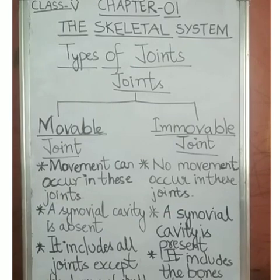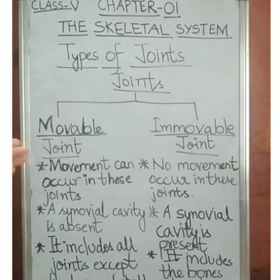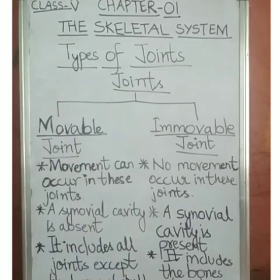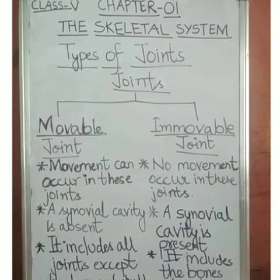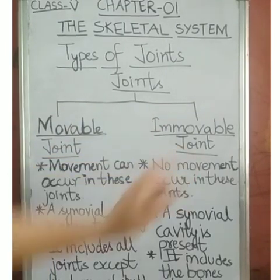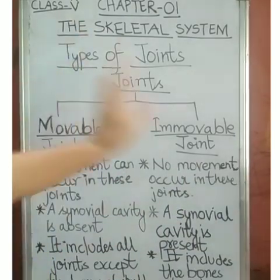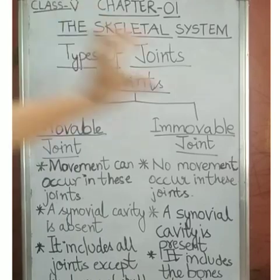The third point of difference: movable joints include all joints in the body except the bones of the skull, since there is no movement in the skull. Immovable joints include the bones of the skull. So these are the three points of difference between movable and immovable joints.